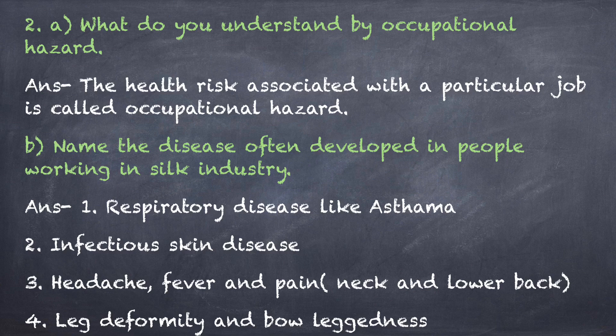B part: Name the diseases often developed in people working in the silk industry. Answer: The diseases often developed in people working in the silk industry are: 1. Respiratory diseases like asthma. 2. Infectious skin diseases. 3. Headache, fever and pain in neck and lower back. 4. Leg deformity and bow-leggedness.